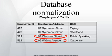Informally, a relational database table is often described as normalized if it is in the third normal form. Most 3NF tables are free of insertion, update, and deletion anomalies. A standard piece of database design guidance is that the designer should first create a fully normalized design, then selective denormalization can be performed for performance reasons.